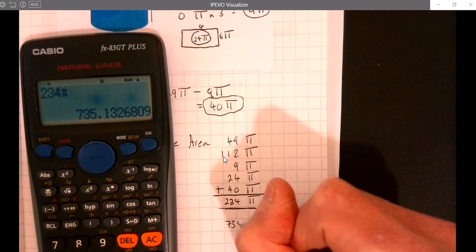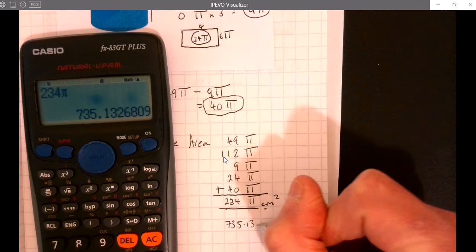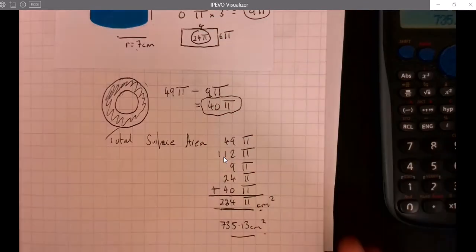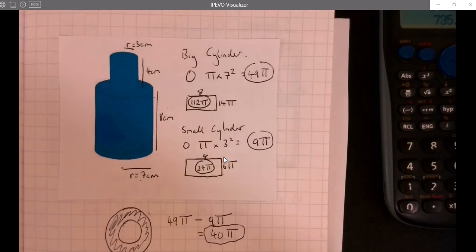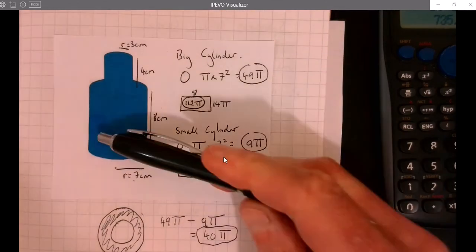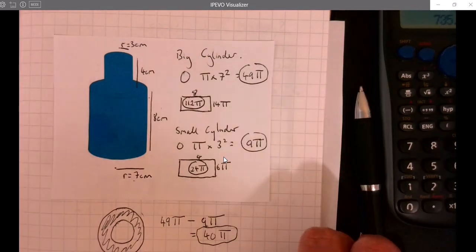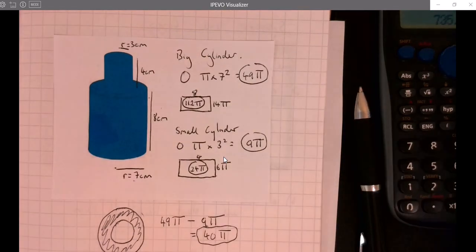735.13 centimeters squared if that's what we really want to do. So we got a more complex problem there in terms of working out surface area with stacked cylinders. Hopefully that's useful for you.